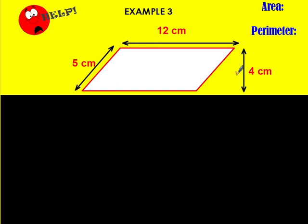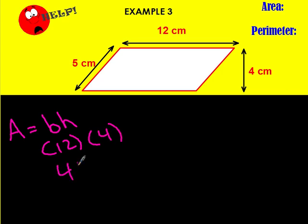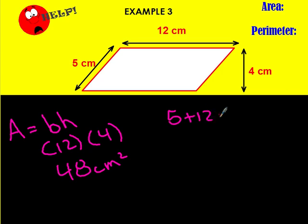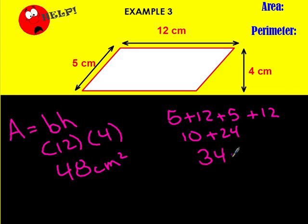Parallelogram — pause it, come back when you're ready. Parallelogram is just base times height. The base is 12 and the height is 4, so that means we have 48 centimeters squared. Perimeter is just adding up the sides: 5 plus 12 plus 5 plus 12. Using the commutative property of addition, 5 plus 5 is 10 and 12 plus 12 is 24, so 10 plus 24 gives us 34 centimeters.